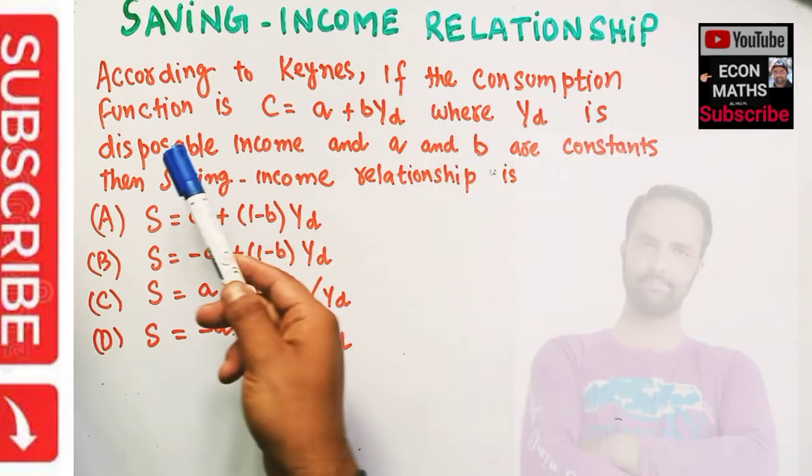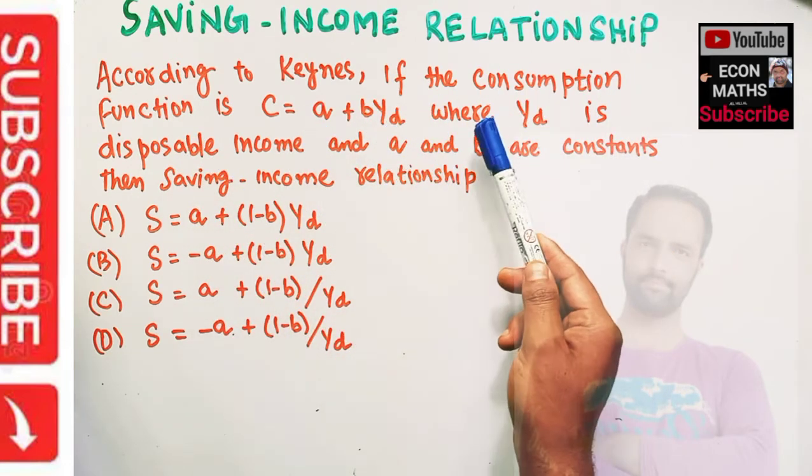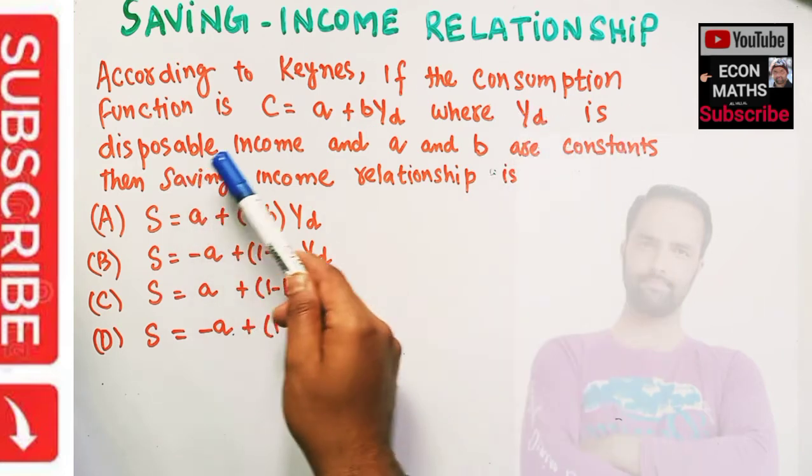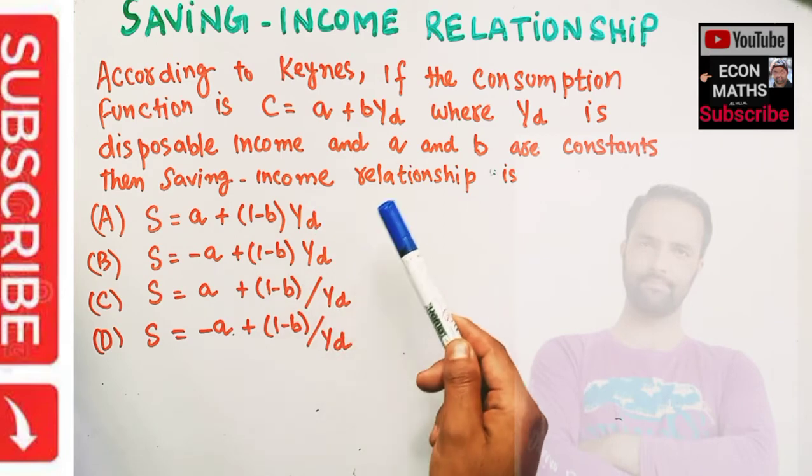according to Keynes, if the consumption function is C = A + B*Y_D, where Y_D is the disposable income and A and B are constants, then saving-income relationship is: